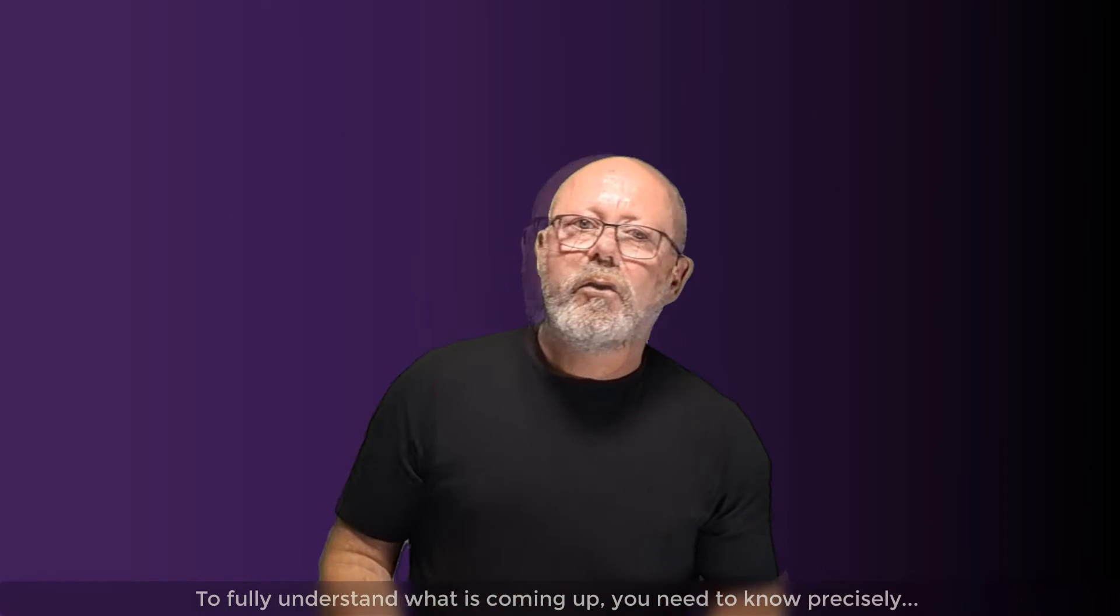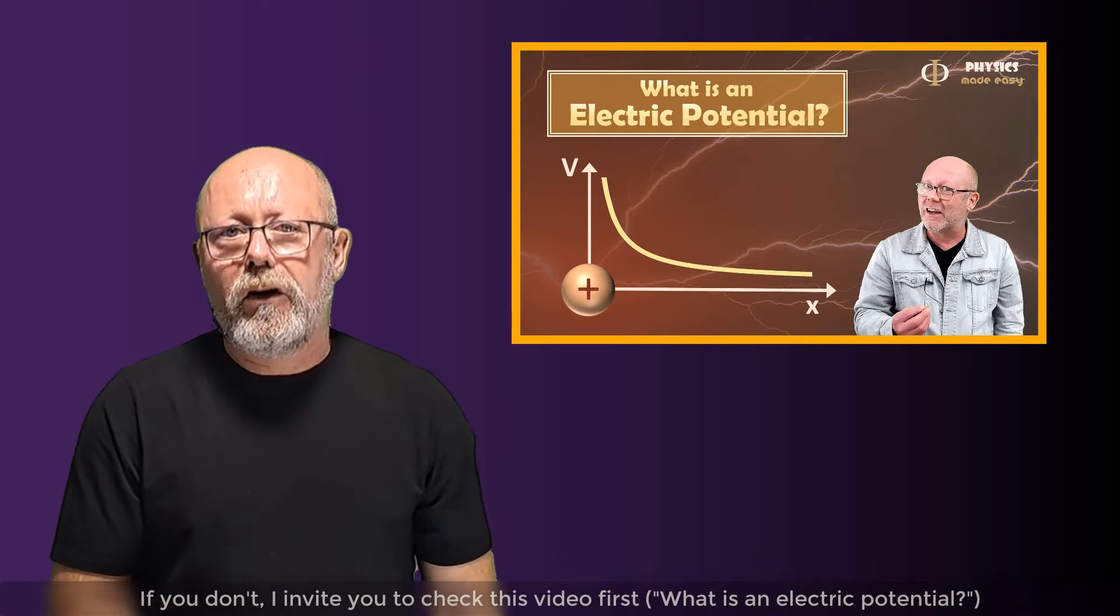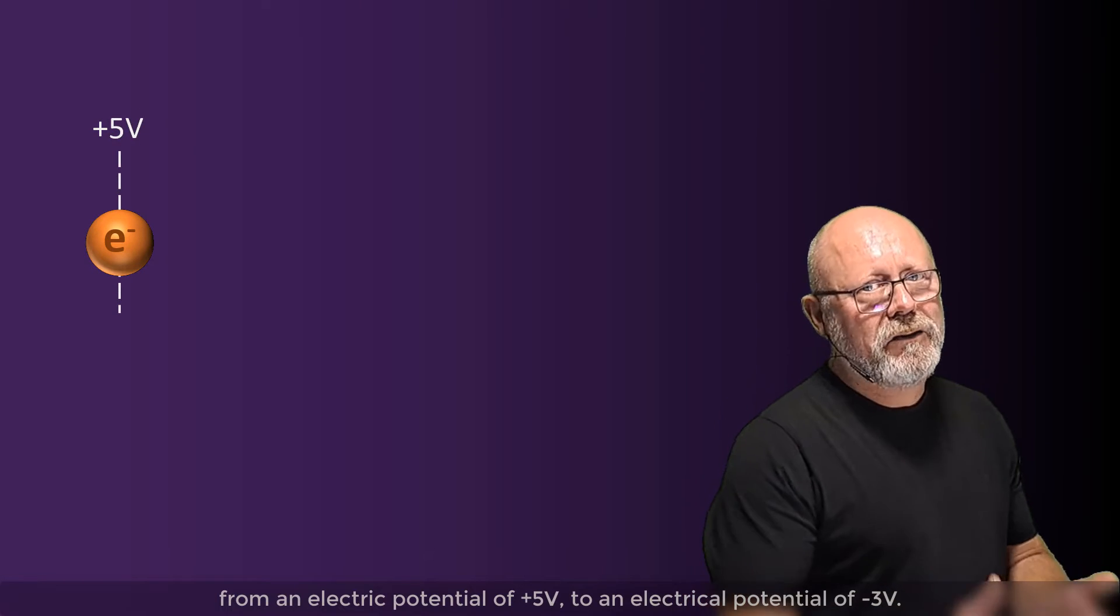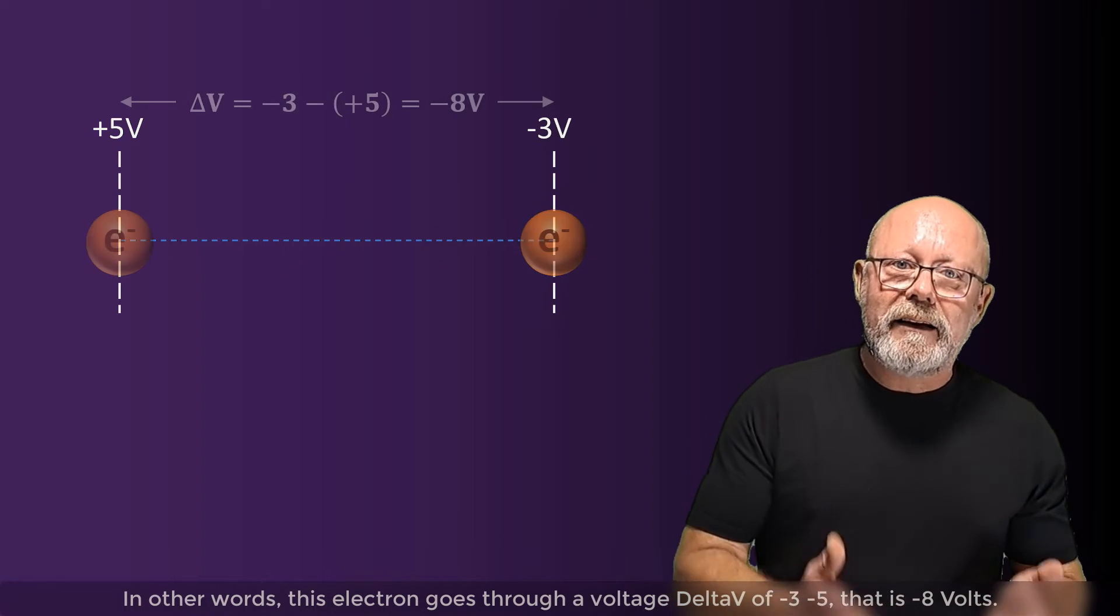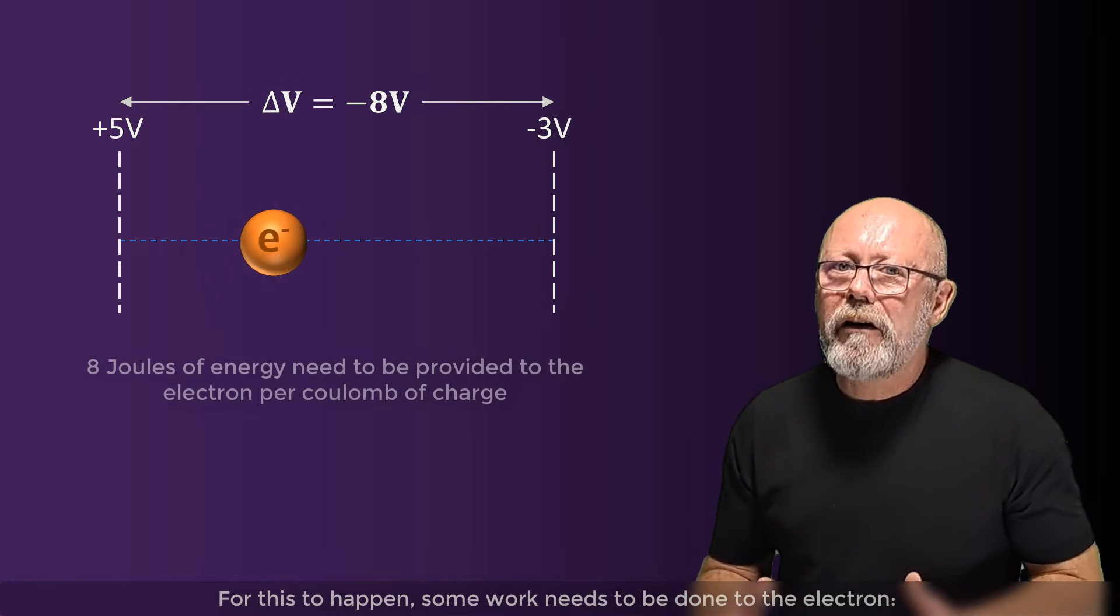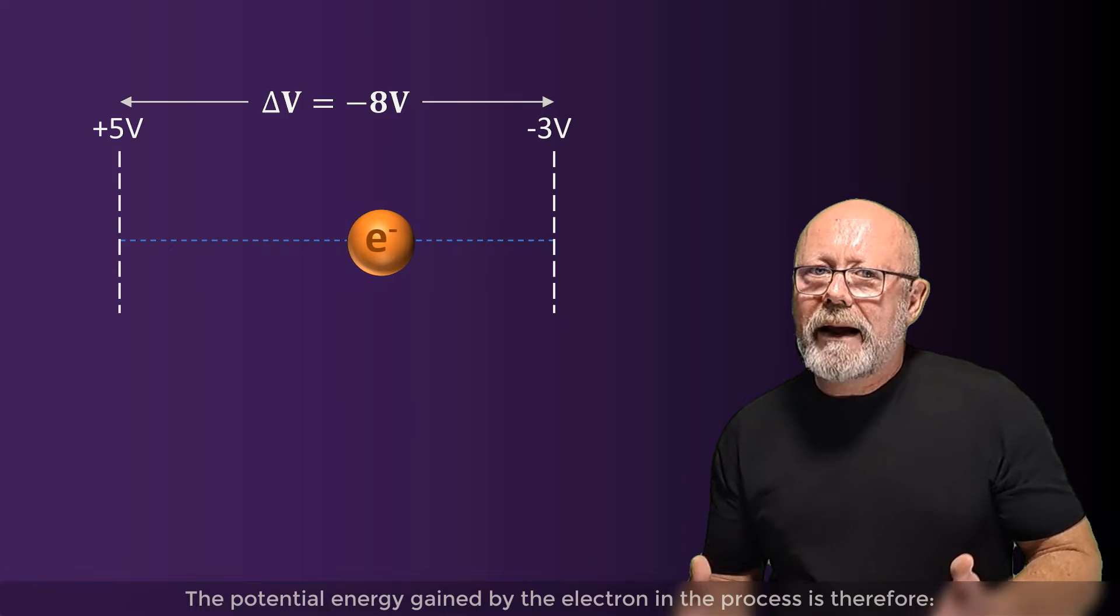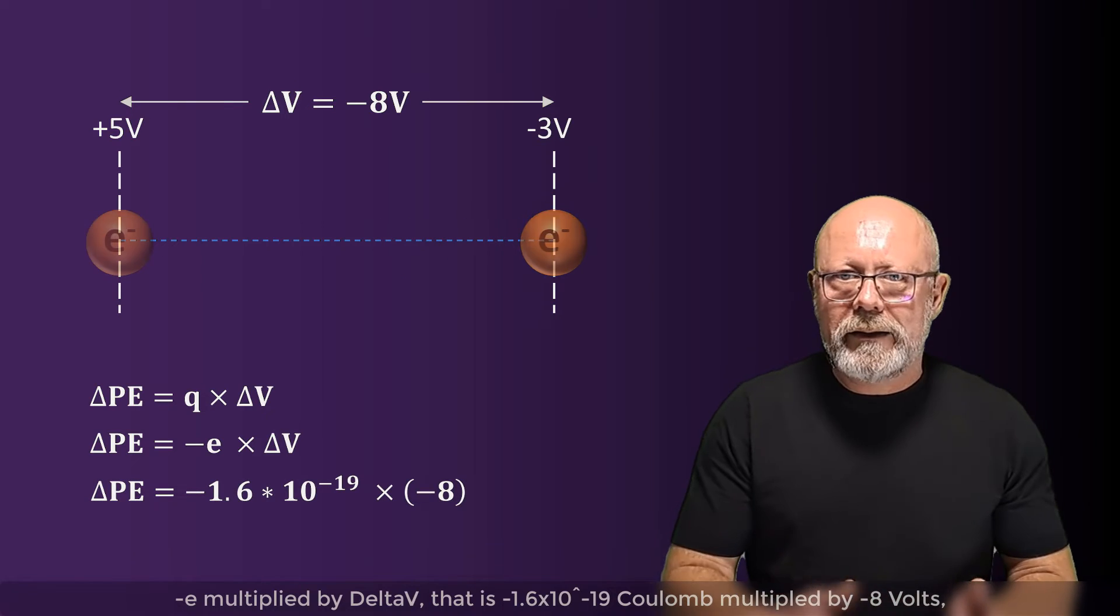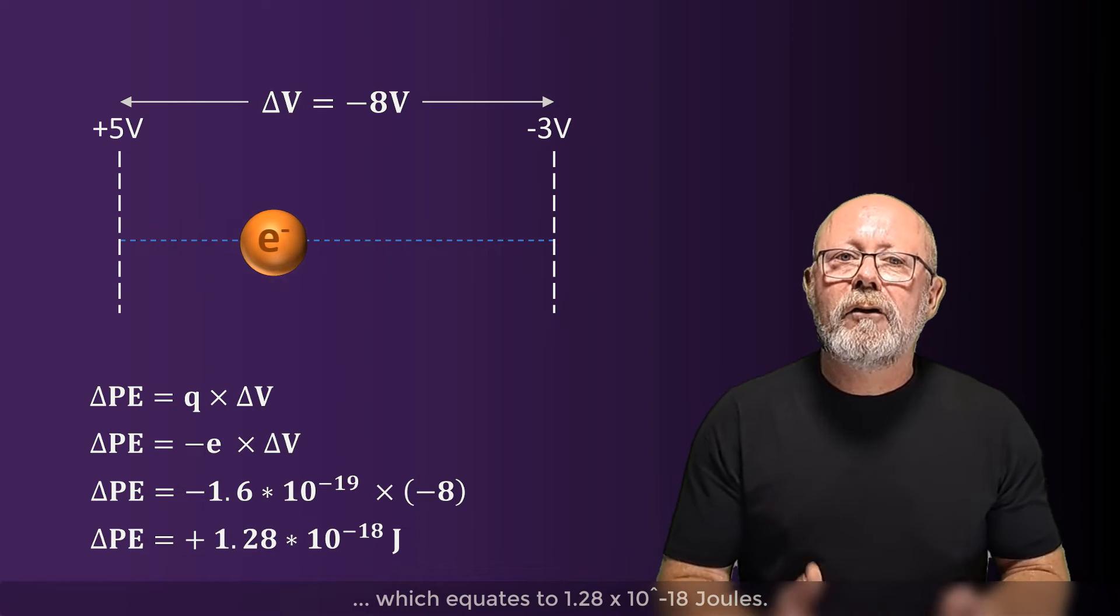To fully understand what is coming up, you need to know precisely what is an electric potential and what is a voltage. If you don't, I invite you to check this video first. Let's consider an electron of charge minus E flowing from an electric potential of, say, plus 5 volts to a potential of minus 3 volts. In other words, this electron goes through a voltage delta V of minus 3 minus 5, that is minus 8 volts. For this to happen, some work needs to be provided to the electron. Yes, 8 joules per coulomb. The potential energy gained by the electron in the process is, therefore, minus E multiplied by delta V, that is, minus 1.6 by 10 to the minus 19 coulomb, multiplied by minus 8 volts, which equates to 1.28 by 10 to the minus 18 joules.